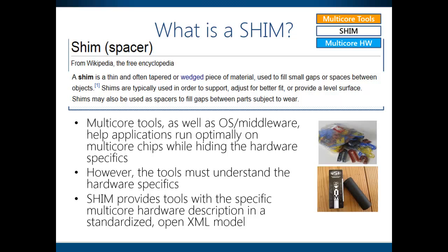Let me provide you a short introduction to SHIM. A shim, in English, is a piece of material that goes between two objects. Our SHIM, which stands for Software Hardware Interface for Multicore, is an interface which provides a specific hardware description in a standardized OpenXML model, so that the tools can help software engineers and system designers to get the best out of multicore chips.